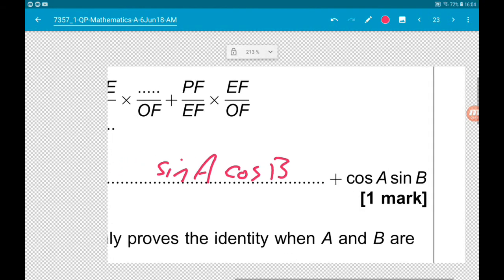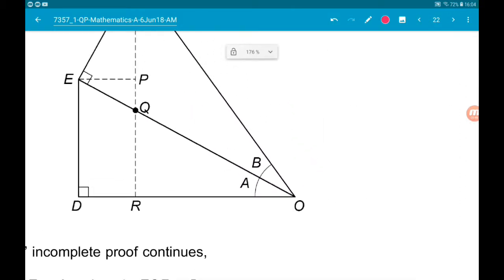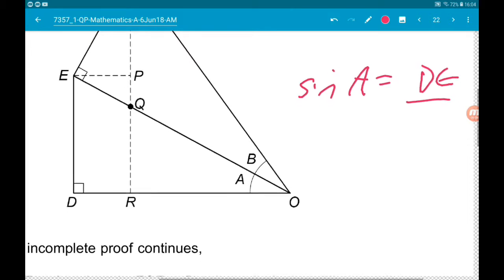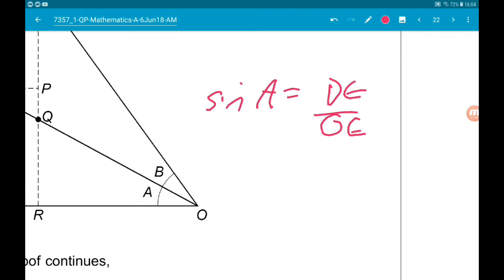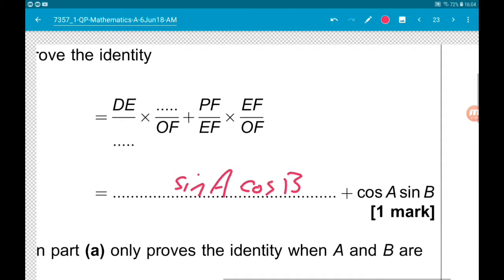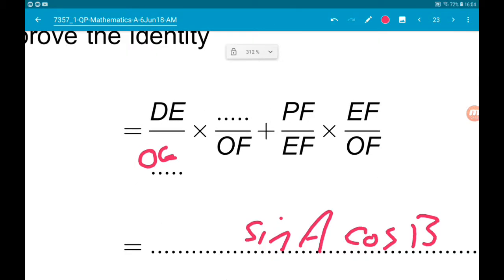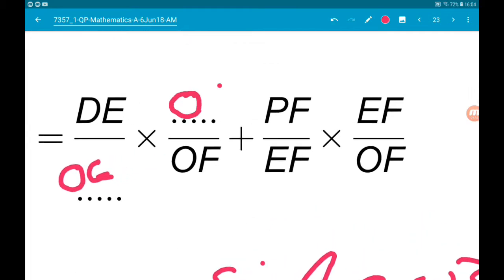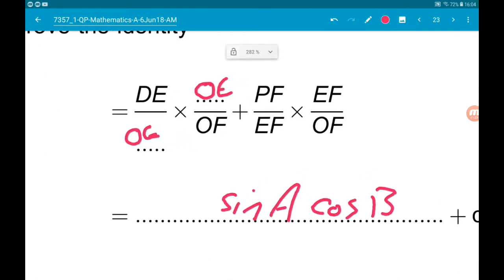Now we know that sin A is DE over the hypotenuse OE. So we know that this needs to be OE. And then if that's OE, this needs to be OE too. So then when you multiply the two fractions together, you do just get DE over OF. Cool.